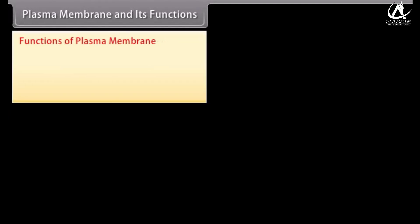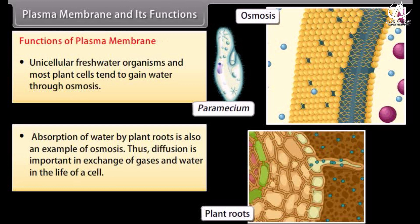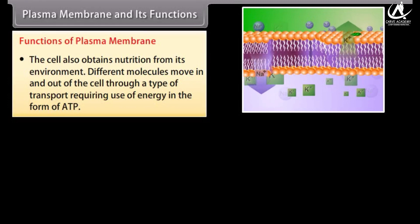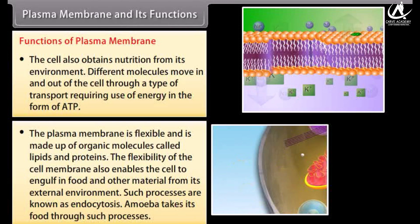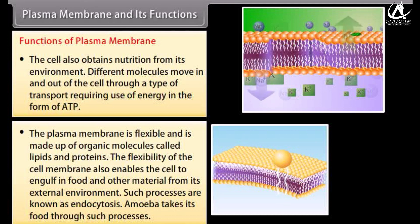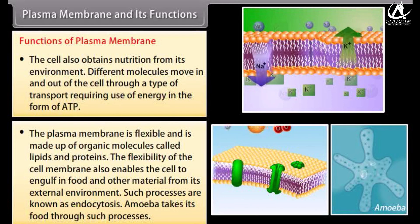Functions of plasma membrane: Unicellular freshwater organisms and most plant cells tend to gain water through osmosis. Absorption of water by plant roots is also an example of osmosis. Diffusion is important in exchange of gases and water in the life of a cell. Different molecules move in and out of the cell through a type of transport requiring energy in the form of ATP. The plasma membrane is flexible, made up of organic molecules called lipids and proteins. This flexibility enables the cell to engulf food from its environment — a process known as endocytosis. Amoeba takes its food through such processes.